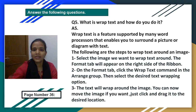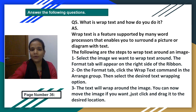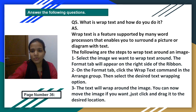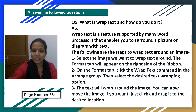Question number 5: What is wrap text and how do you do it? Wrap text is a feature supported by many word processors that enables you to surround a picture or diagram with text. The steps to wrap text around an image are: Step 1: Select the image you want to wrap text around — the Format tab will appear on the right side of the ribbon. Step 2: On the Format tab, click the Wrap Text command in the Arrange group and select the desired text wrapping option. Step 3: The text will wrap around the image. You can also click and drag the image to a desired location.